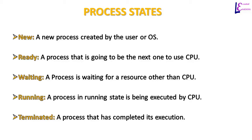The fundamental states of processes are five, though some books may include more. In a new state, a process is created by the user or operating system. In a ready state, a process is ready to be sent to the CPU for execution. In a waiting state, a process is waiting for a resource other than the CPU, for example an I/O device. In a running state, a process is being executed by the CPU. A process is in a terminated state if it has completed its execution.